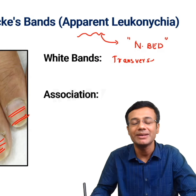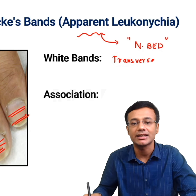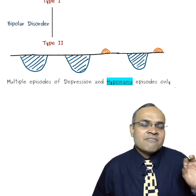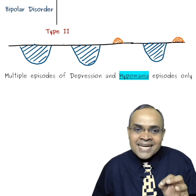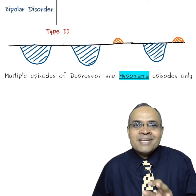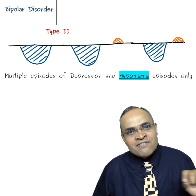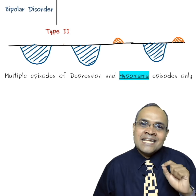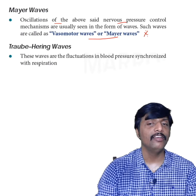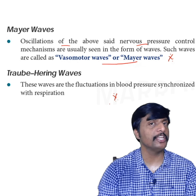The difference between Kerley lines and these bands is that these patients have multiple episodes of depression and hypomania only — they will never ever have a single episode of mania. There is also respiration and BP fluctuation to note.